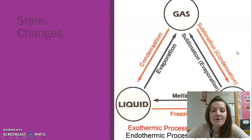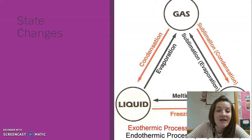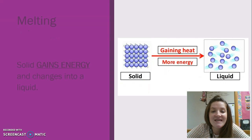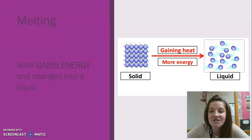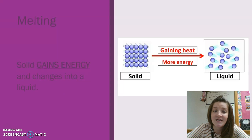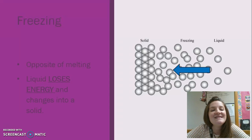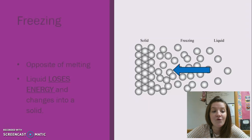State changes are about solids, liquids, and gases transforming into one another with the gain or loss of energy. Melting is one state change that happens when a solid changes into a liquid as it gains energy. Freezing is the opposite of melting. It's when a liquid loses energy and changes back into a solid. Those particles move slower and bonds can form again.